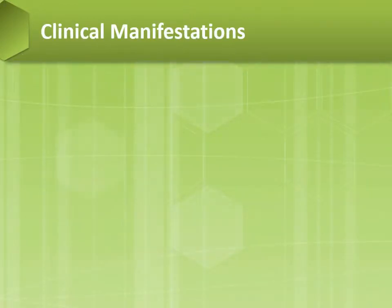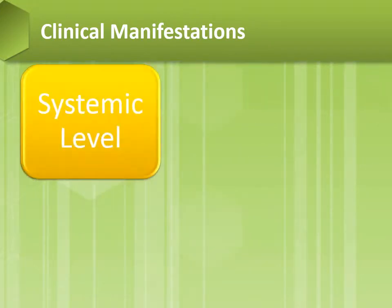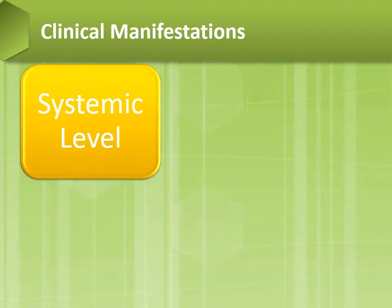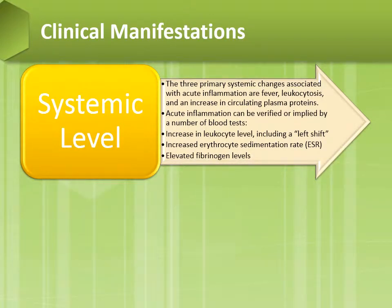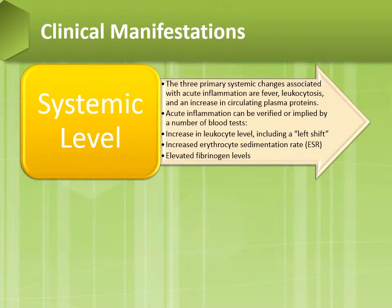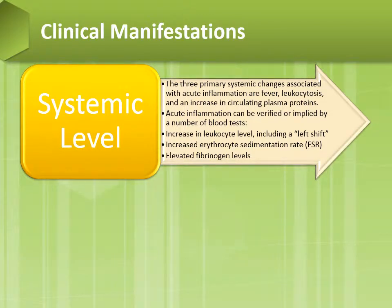At the systemic level, the three primary systemic changes associated with acute inflammation are fever, leukocytosis, and an increase in circulating plasma proteins. Acute inflammation can be verified or implied by a number of blood tests: an increase in leukocyte level including a left shift, an increased ESR rate, and an elevated fibrinogen level.